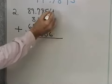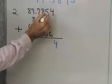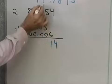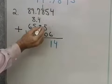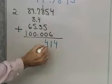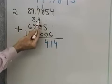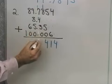I'm just going to add in columns. So, I add in this column, I get 4. I add in this column, 5 and 6 is 11. So, I carry the 1 to the next column. 8 and 5 is 13, plus 1 is 14. Carry that to the next column. 7 and 1 is 8, and 4 is 12, and 3 is 15.